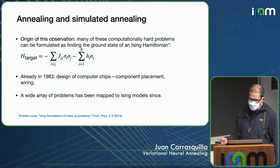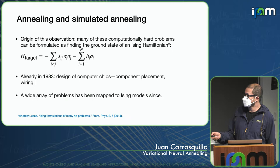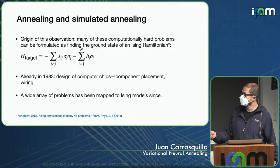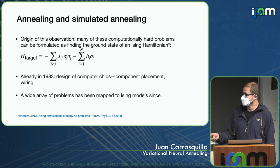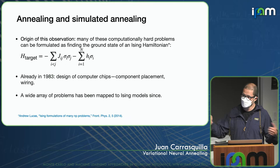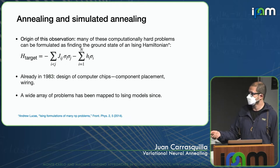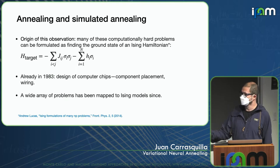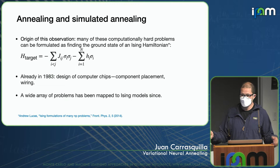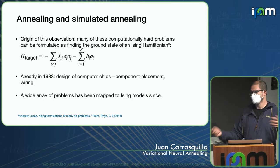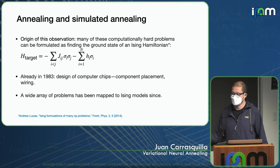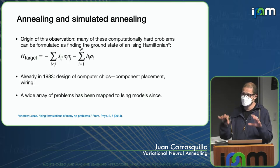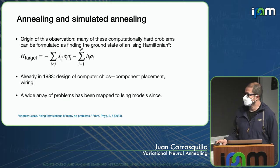Many combinatorial optimization problems can be formulated as finding the ground state of an Ising Hamiltonian H_target. It's basically an Ising model where sigma_i is plus or minus one, the coupling J_ij encodes the problem, and fields h_i are coupled to the spins sigma_i. Already in 1983, this simulated annealing algorithm was used to design computer chips — how you place components in a two-dimensional grid with the wiring.